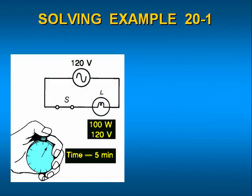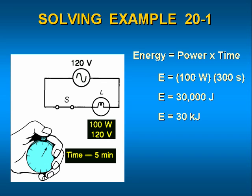Here's an example of computing energy used in an electric circuit. A 100 watt lamp operates for five minutes. Five minutes times 60 seconds per minute equals 300 seconds. The energy consumed by the lamp is equal to power times time. Where the energy consumed equals 100 watts times 300 seconds equals 30,000 joules. 30,000 joules equals 30 kilojoules.